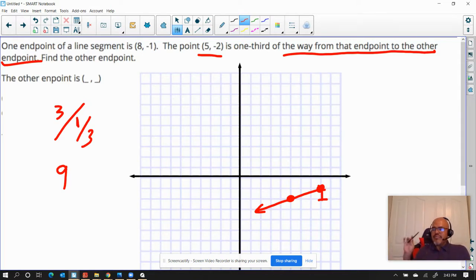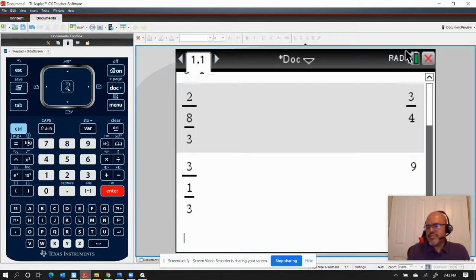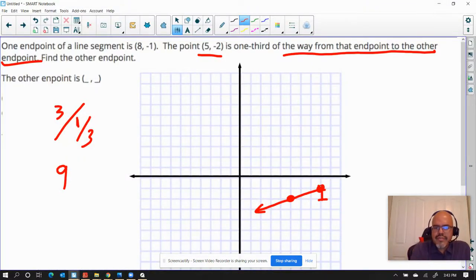Because originally they went only 3 units to the left, and that's one-third of the entire distance. Now when you take 3 divided by one-third, which if you go ahead and take 3 divided by parentheses 1 divided by 3, it gives you 9 units. So 9 units away from this point.